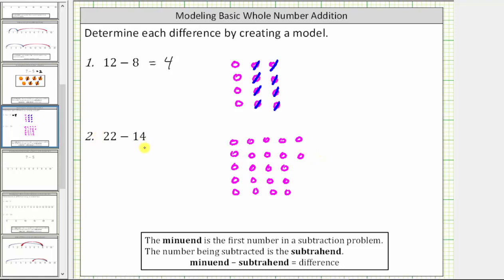Because we are subtracting 14, we now remove or take away 14 small circles. So we remove 1, 2, 3, 4, 5, 6, 7, 8, 9, 10, 11, 12, 13, 14 circles,